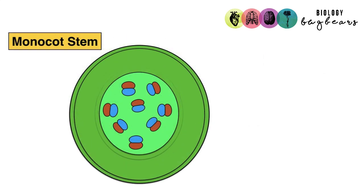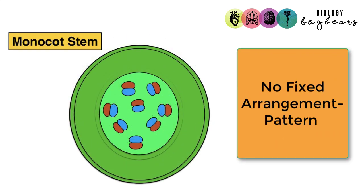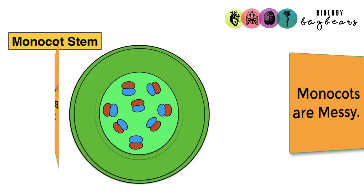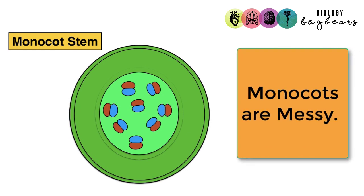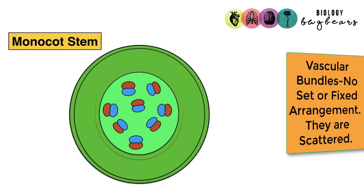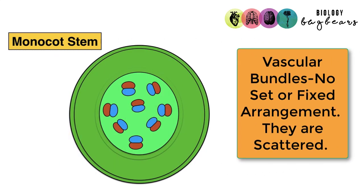This is the monocot stem. You can see it is quite similar except for the vascular bundles — they are not arranged in that fixed circular pattern; they're scattered in the middle. A funny easy way to remember the difference is that monocots are messy, but don't write that in your exam. Say instead that there is no fixed arrangement and the vascular bundles are scattered.